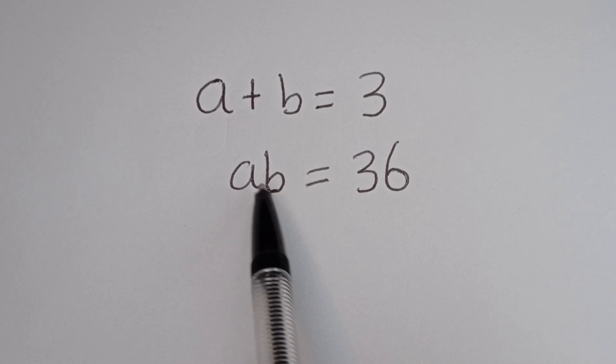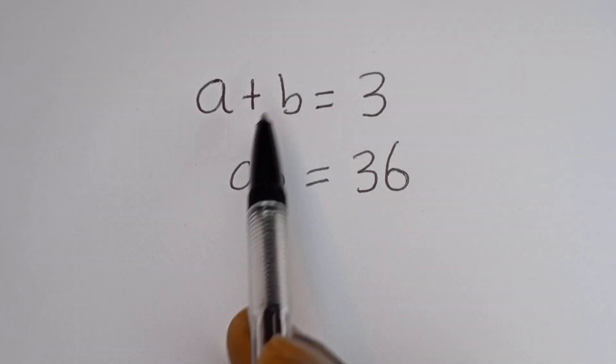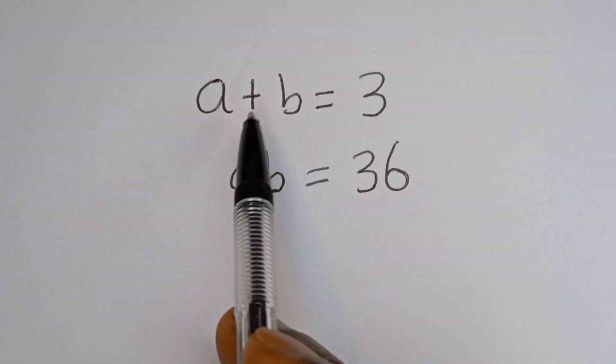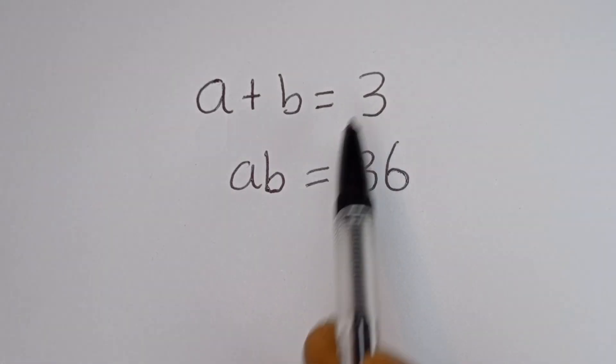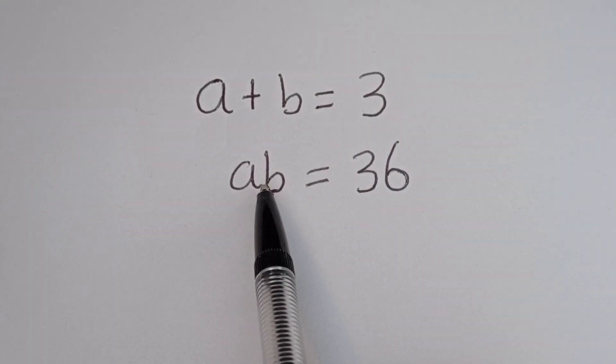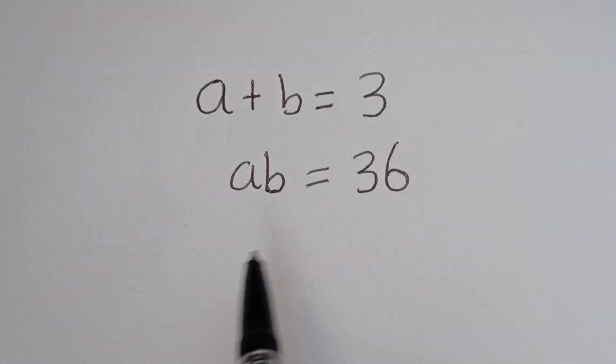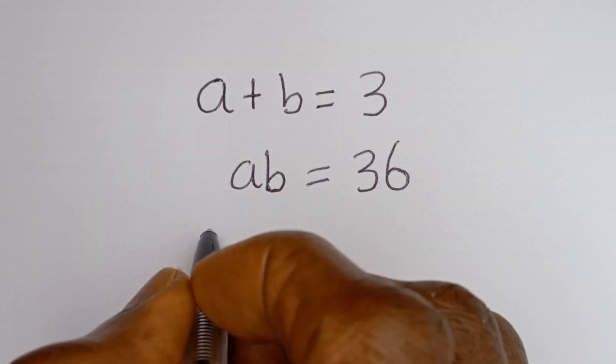Hello. How to solve for A and B in this equation? A plus B is equal to 3, and AB is equal to 36.